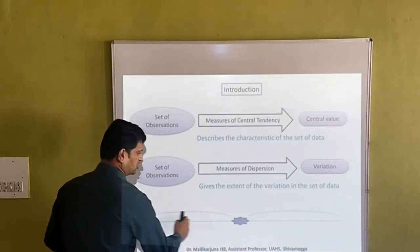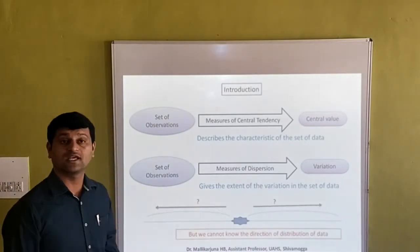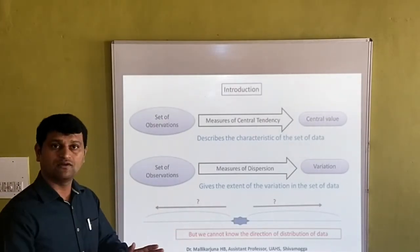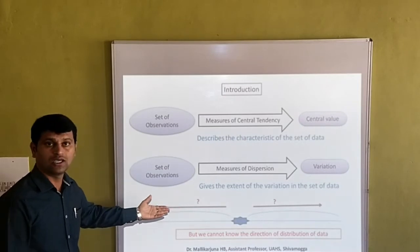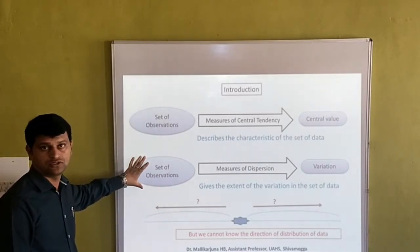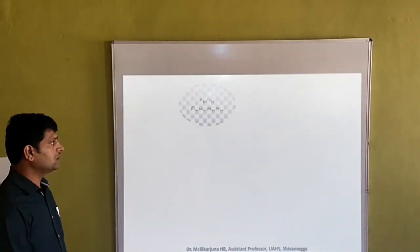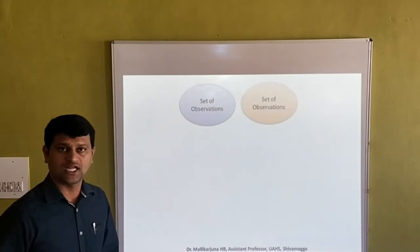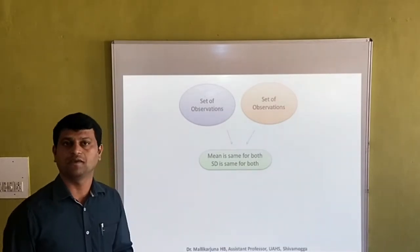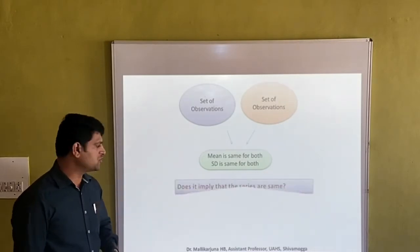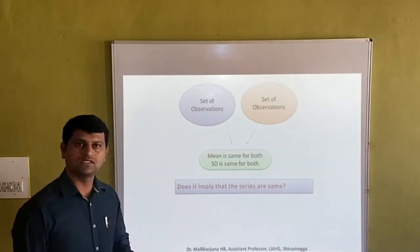From measures of central tendency we got one central value, and from measures of dispersion we got the variation — how much variation from the central value. But we cannot know the direction of the distribution, whether the distribution has more observations on the left side or the right side. We don't know the direction of deviation or the direction of distribution of the data. Consider two sets of observations where the mean is the same and the standard deviation is the same. Does that imply that the series are the same?